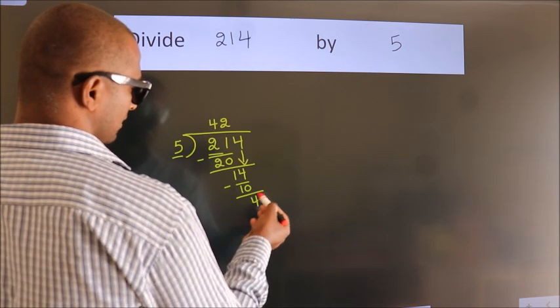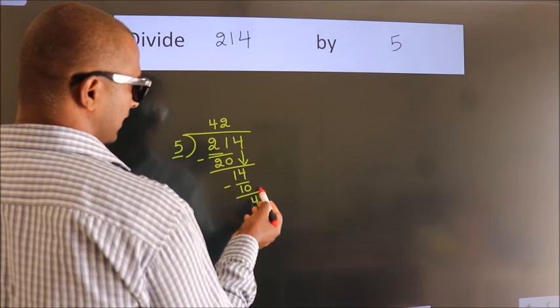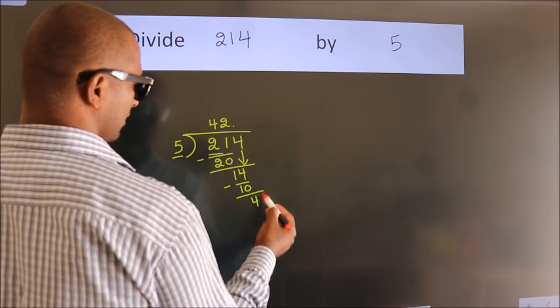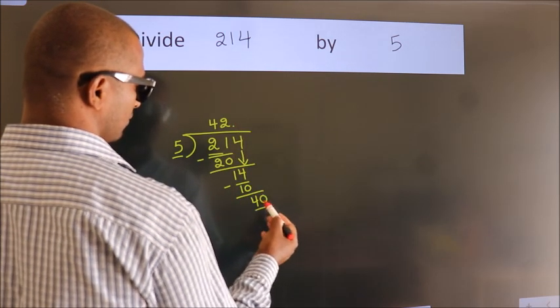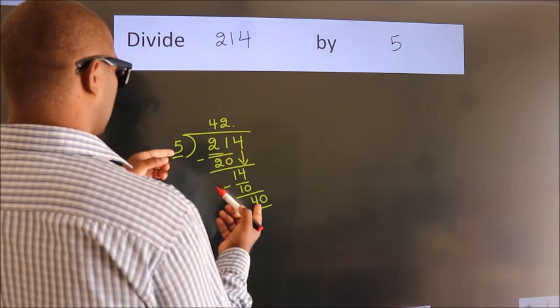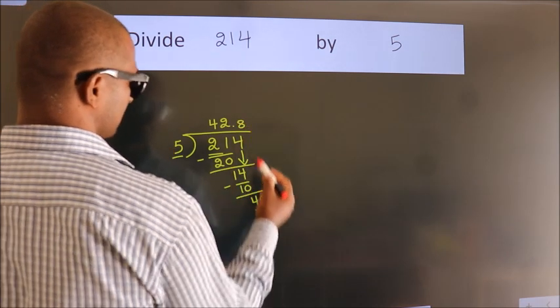After this, no more numbers to bring down. So what we do is, we put a dot and take 0. So 40. When do we get 40 in the 5 table? 5 eights, 40.